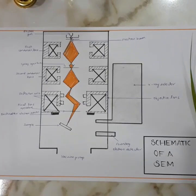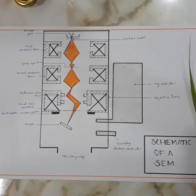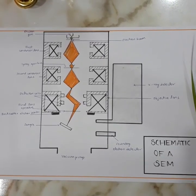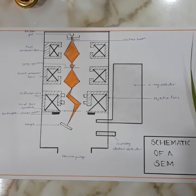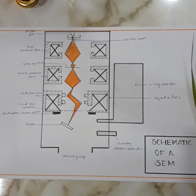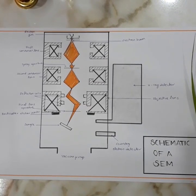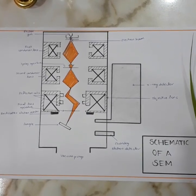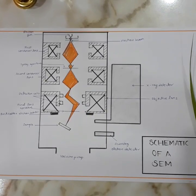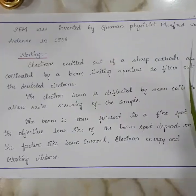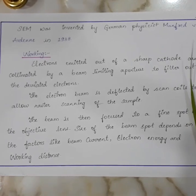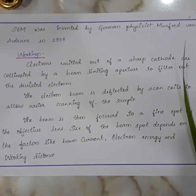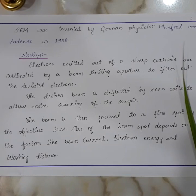Any sample can be studied in a SEM — it can be a ceramic, metal, or biological specimen. Different types of samples may require different sample preparation steps or special imaging conditions in the SEM. SEM was invented by German physicist Manfred von Ardenne in 1938.